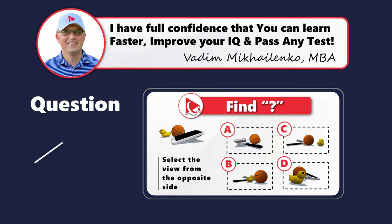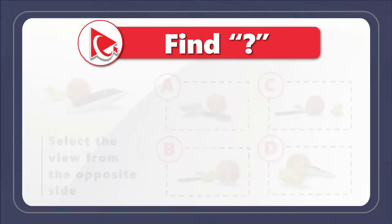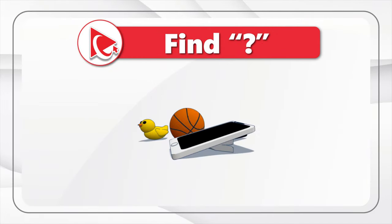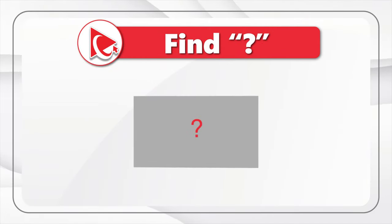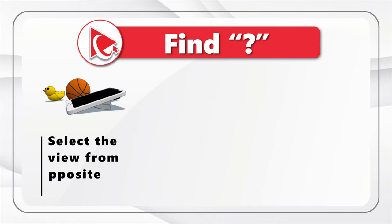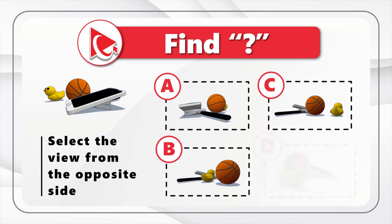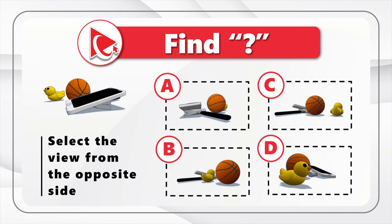Here's an amazing question to test your spatial reasoning. You're presented with a three-dimensional view and you need to select the view from the opposite side out of four possible choices — A, B, C, and D. Take a close look, as it may not be as easy as it seems.